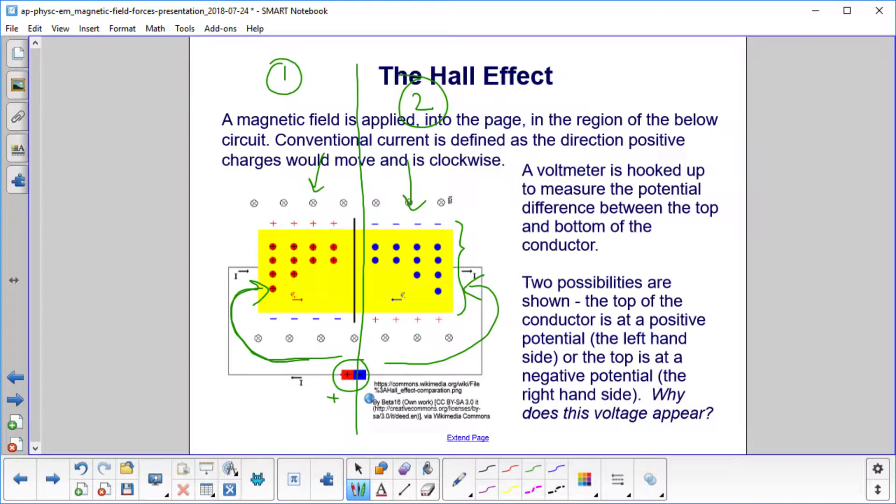Why does this voltage exist? On condition one, we have positive charges up here, negative charges down here. So if you measured the voltage, you'd get a positive delta V. On the other side, negative charges got up here, so you would read a negative voltage. Clearly both can't happen.